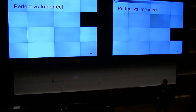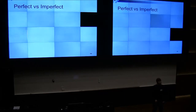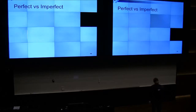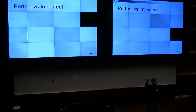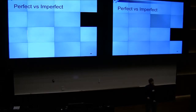An imperfect rainbow table is one that you just generate, then sort. There will be duplicate endpoints — this is from chains that merge. You could just call this traditional rainbow tables. You have all these endpoints that are the same.